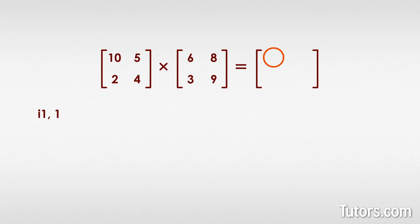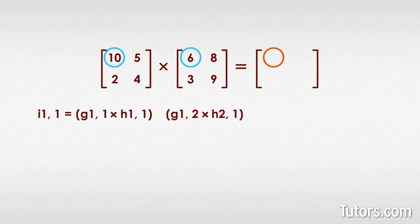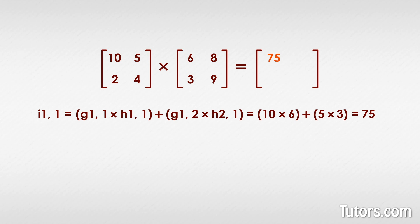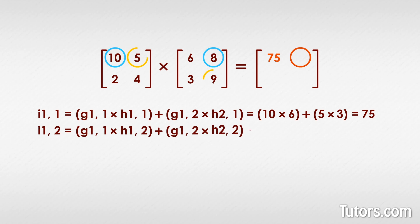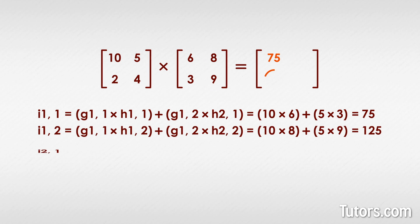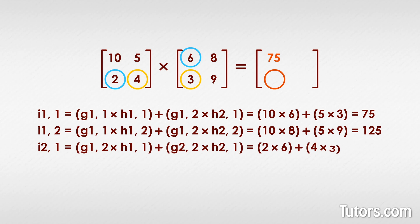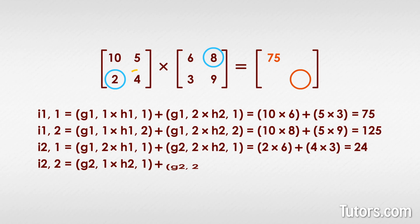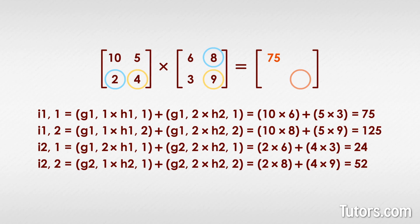To multiply two square matrices, you take each entry in the first row of the first matrix and multiply it times its matching entry in the first column of the second matrix, then add all those products together. To get solution entry i_11, we multiply g_11 times h_11: 10 times 6, then g_12 times h_21: 5 times 3, and add them — 10 times 6 plus 5 times 3 equals 75. Repeat these steps for the other entries. Keep in mind the order of matrices matters in multiplication — multiplying matrix G times H gives a different answer than H times G.